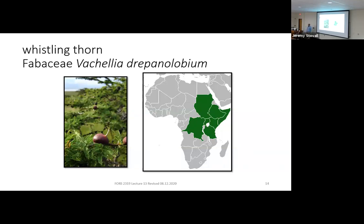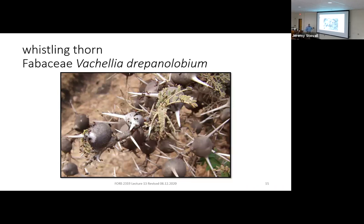One more acacia: Vachellia drepanolobium, whose common name is Whistling Thorn, distributed in the Horn of Africa and Eastern Africa. If you're wandering around at night and the breeze picks up, you'll hear a dull whistling noise — like blowing on a beer bottle. It turns out this Vachellia tree has weird bulbous structures with thorns sticking out, but they have holes in them, and the wind blowing across those holes makes the whistling noise.